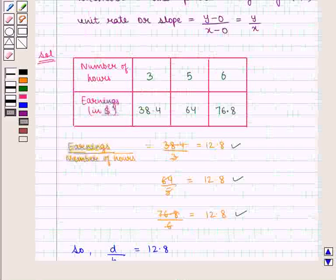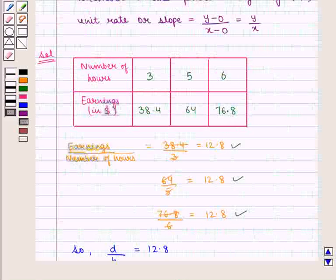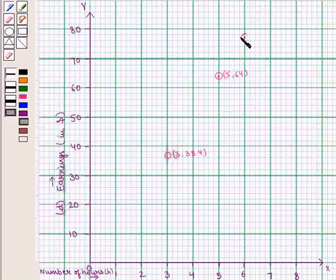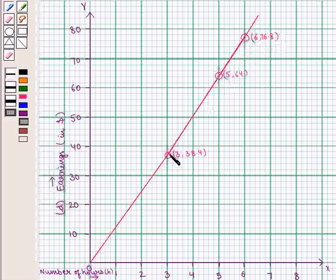And lastly we shall plot the point 6, 76.8 and here we get the point 6, 76.8. And by joining all these points we get a straight line and we see that this line passes through the origin that is 0,0.